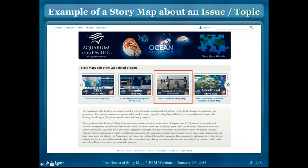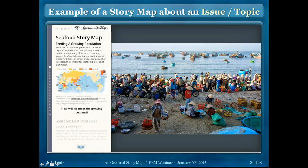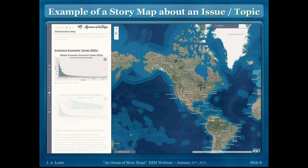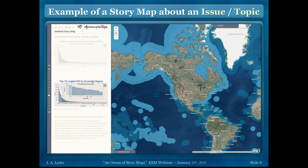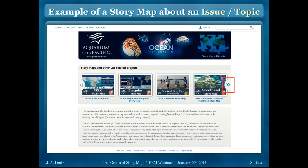We've also recently started making story maps that are more content-driven and focused on issues, such as our seafood story map. This story map has a great deal more text and will walk through and teach the audience about Southern California seafood and global seafood — how seafood can be used sustainably. It talks about exclusive economic zones where seafood is being fished, where the ten largest EEZs are, and then the United States zones. It goes into this topic in much more depth, which may be better suited for home use rather than on the aquarium floor.